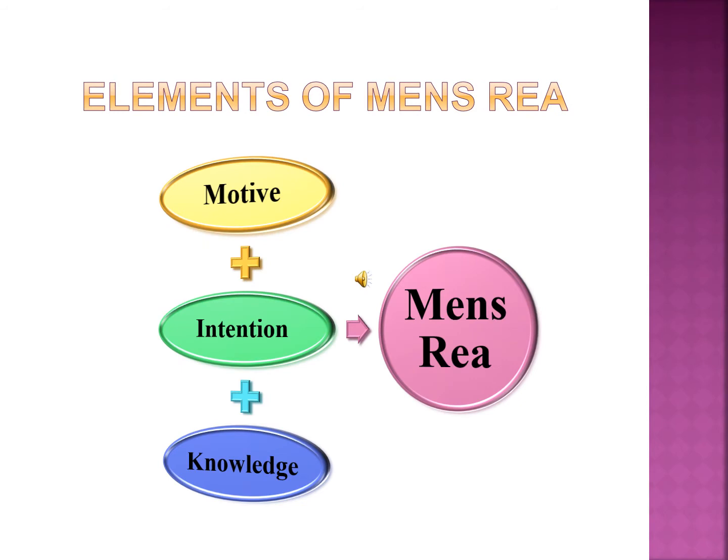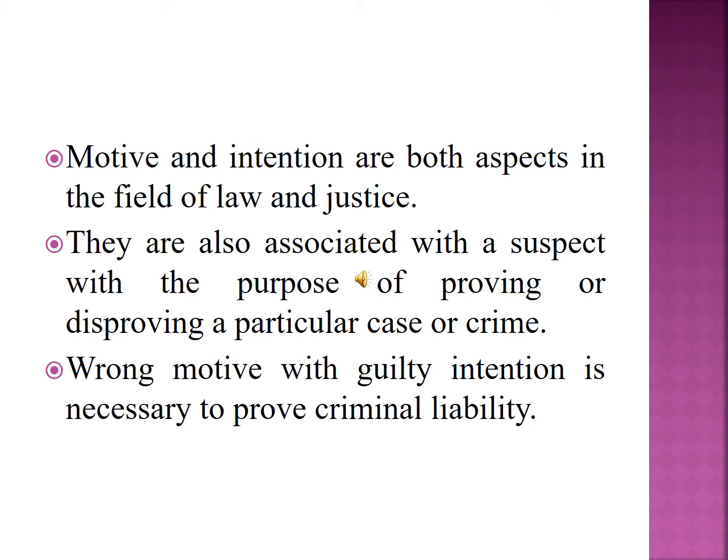The second element of crime is mens rea, which may be explained in various forms: a guilty mind, a guilty or wrongful purpose, a criminal intent, guilty knowledge, and willfulness — all constitute the same thing, that is mens rea. There are three degrees or categories of mens rea: first is motive, second intention, and third is knowledge. There must be a combination of all three degrees to constitute mens rea, which is necessary to establish criminal liability in court. Motive and intention are both very important aspects in the field of law and justice, associated with a suspect for the purpose of proving or disproving a particular case or crime.